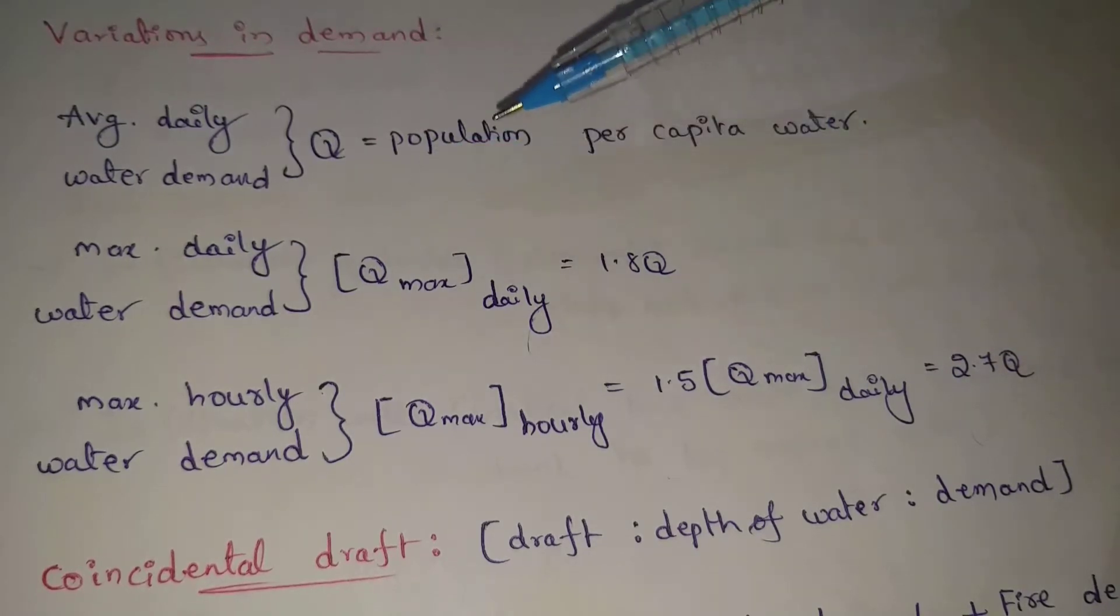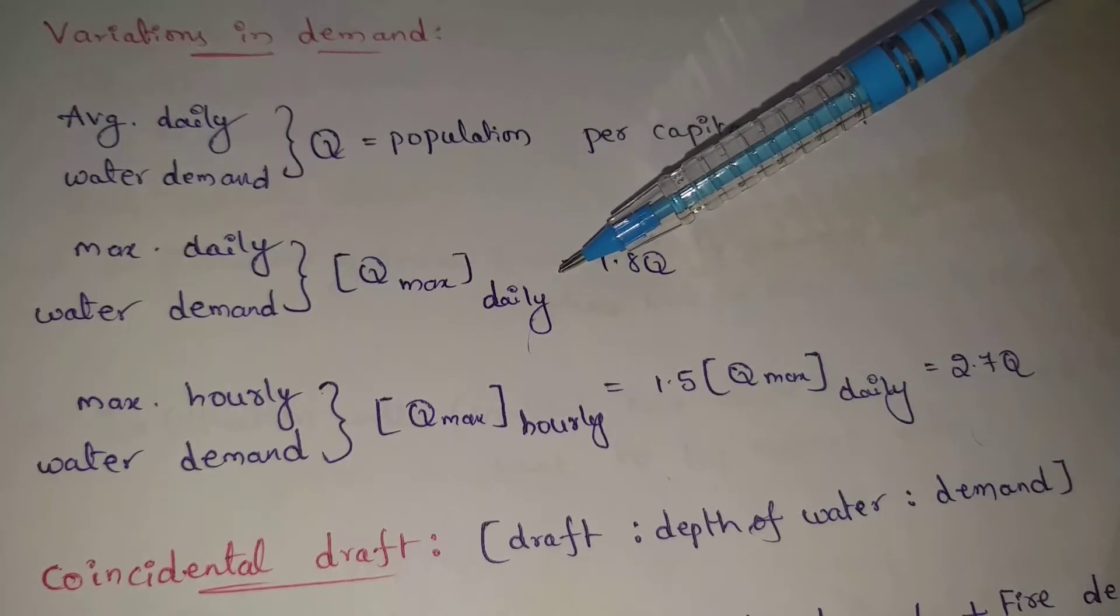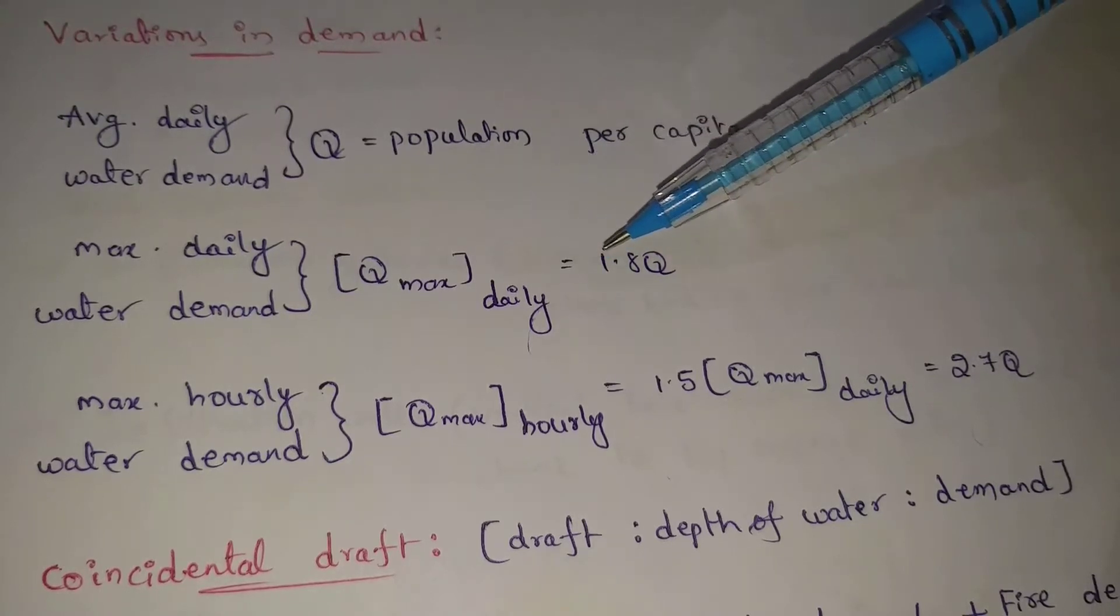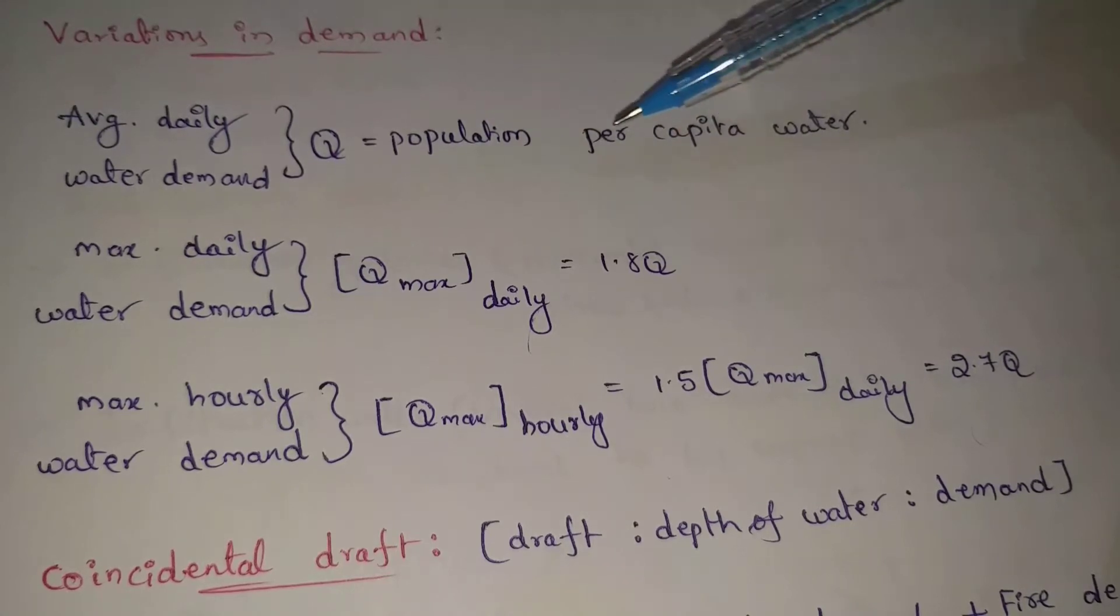Next, maximum daily water demand. Maximum daily water demand is Q max daily, which equals 1.8Q, where Q means population times per capita water, the average daily water demand.